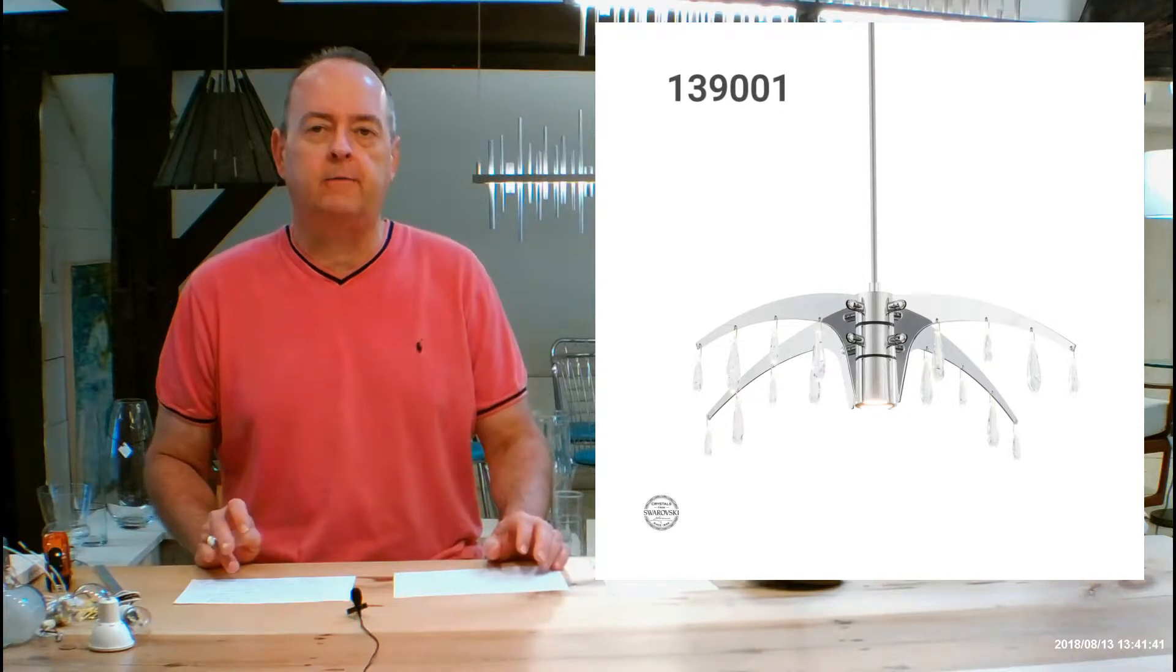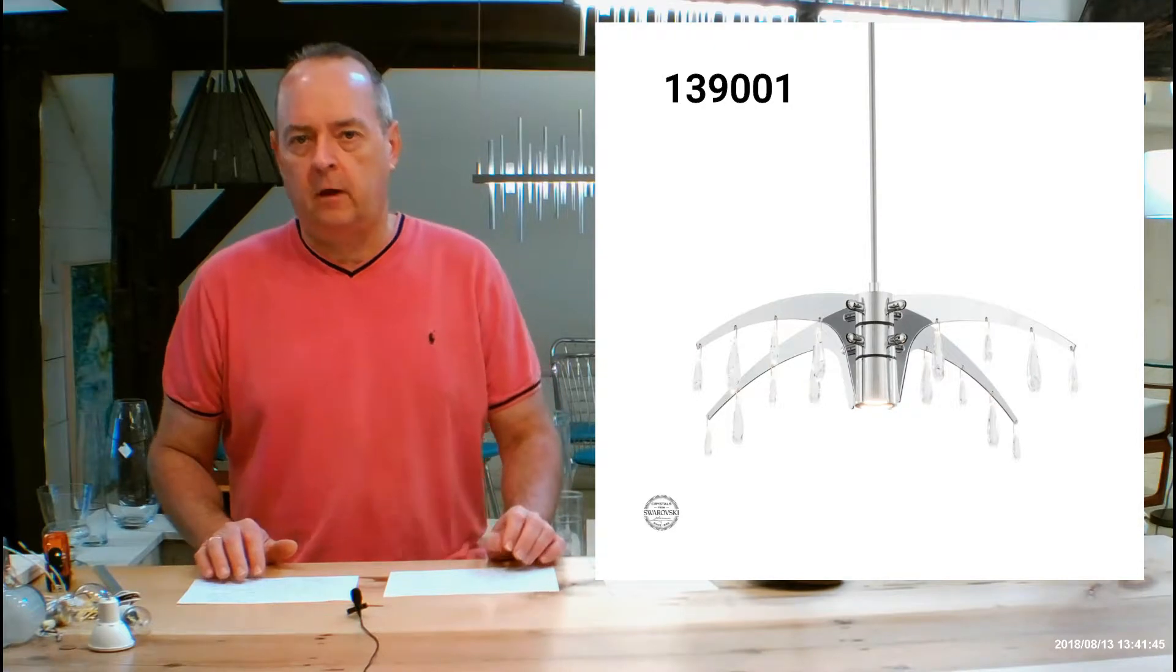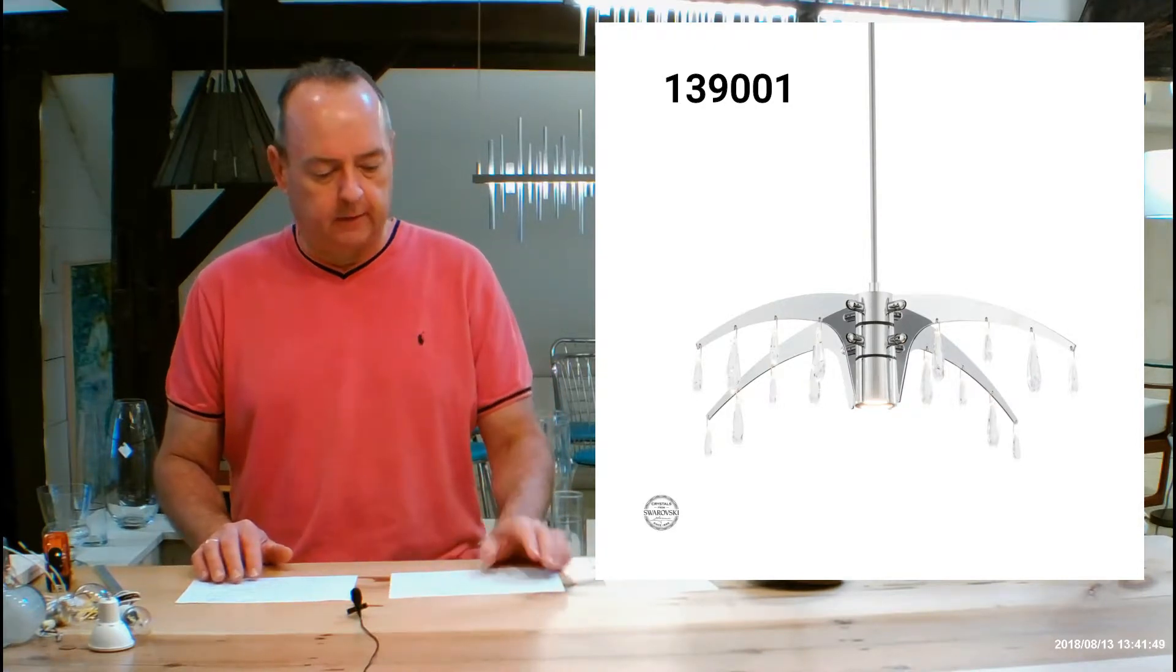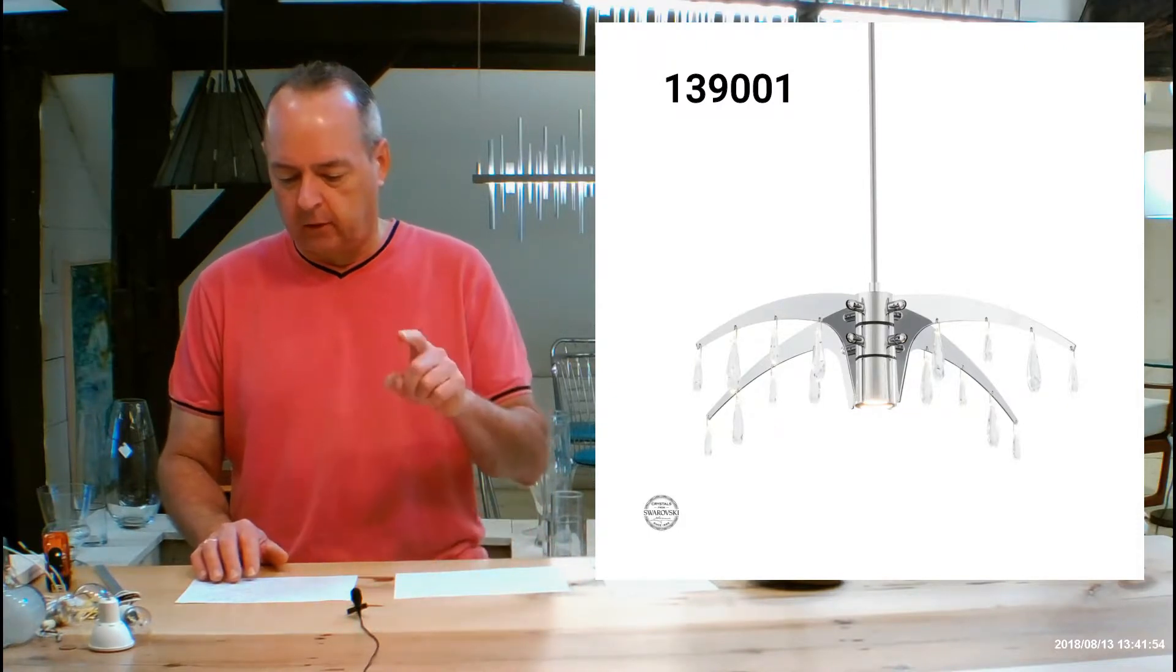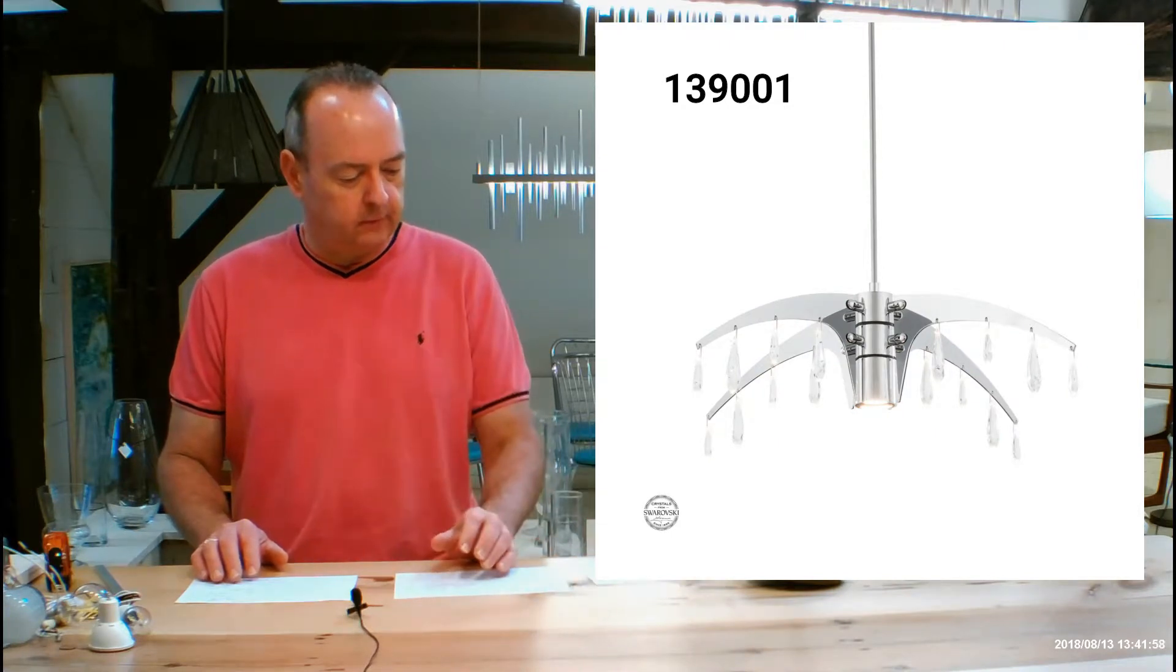Hi, I'm Christopher Dunnegan. This is handmadeinvermont.com and today we're talking about the Hubberton Forge pendants called the Rain Star. There are two sizes we're going to be talking about today. The 139002 is a larger one, the 139001 is a smaller one. There's also a linear version of this, the 139003.